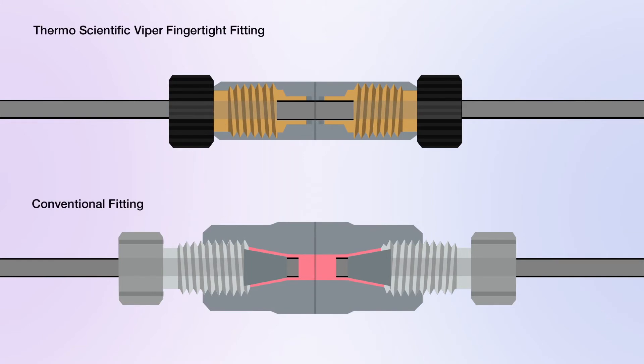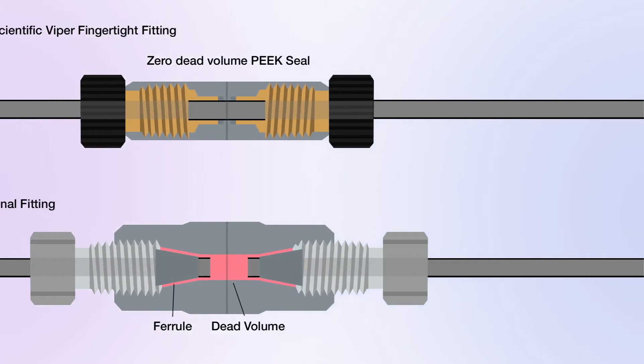Injection system, column diameter, and union dead volume are all important considerations.